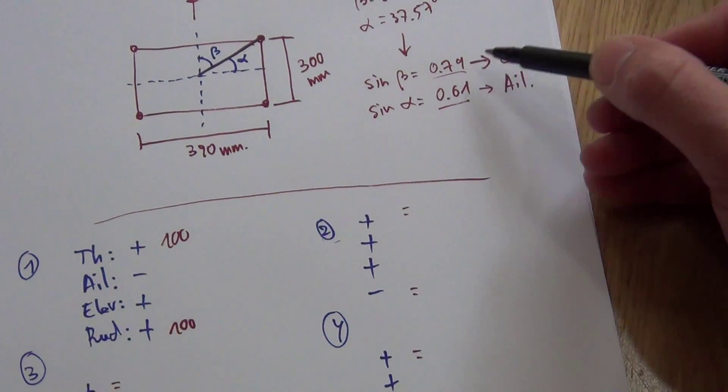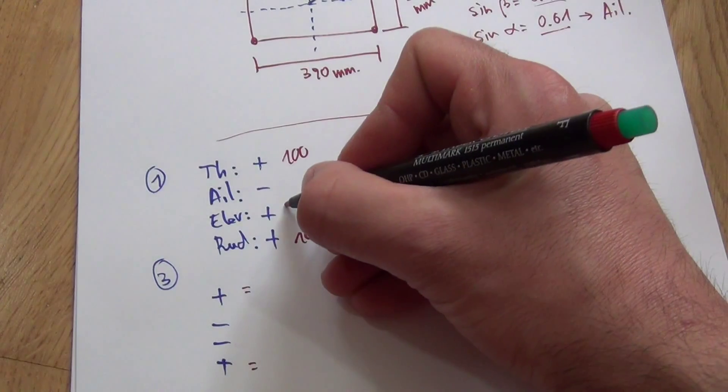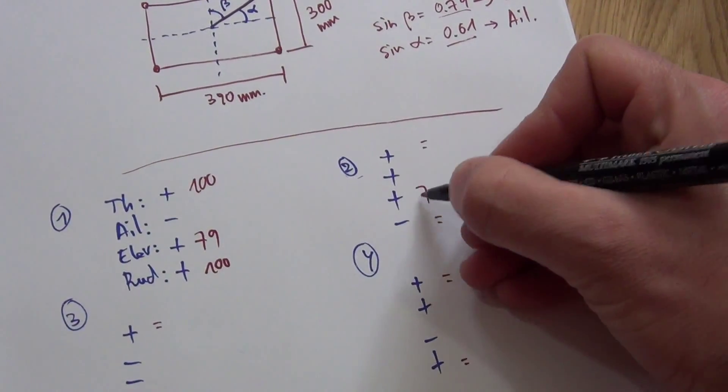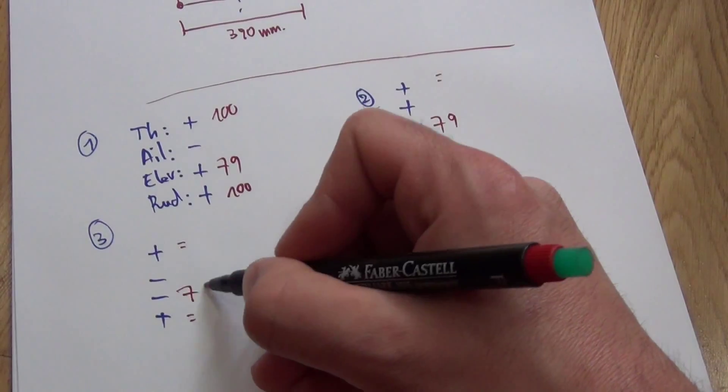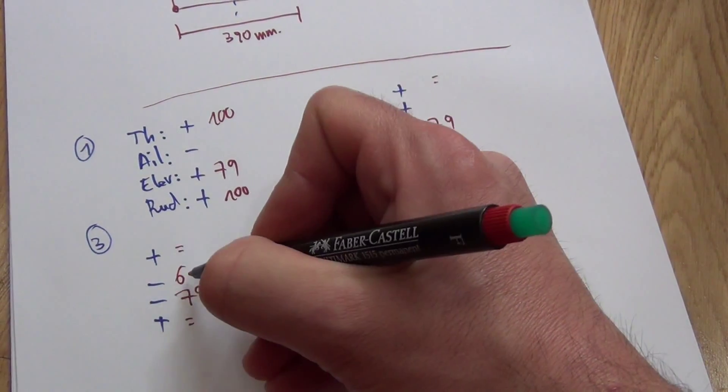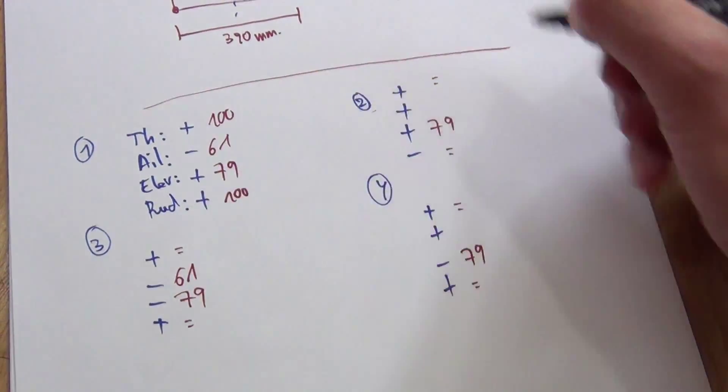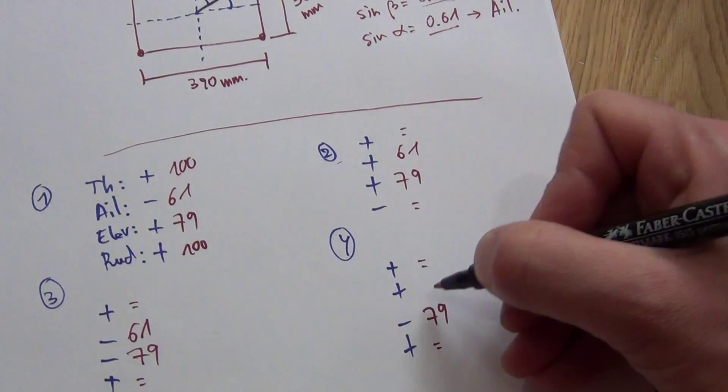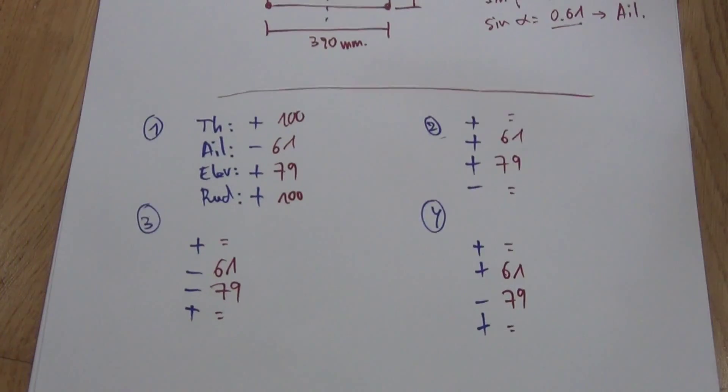So for example, elevator, all the elevators would be here 79, 79, 79, 79. And in the aileron, 61, 61, 61, 61. So now you have these values.